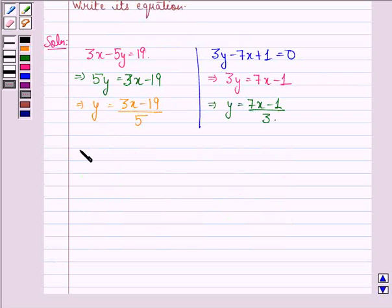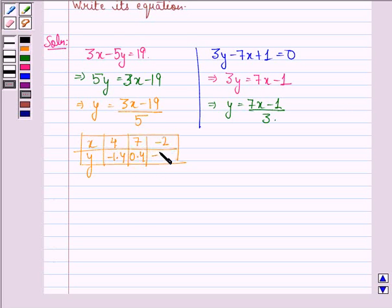Let us find the points lying on this line. The points will be, when we take x to be equal to 4, we get y as minus 1.4. When we take x to be 7, y is 0.4. When x is minus 2, y is minus 5.